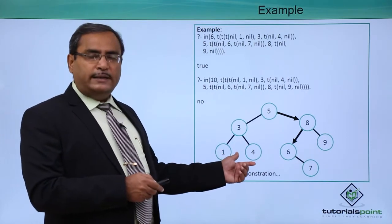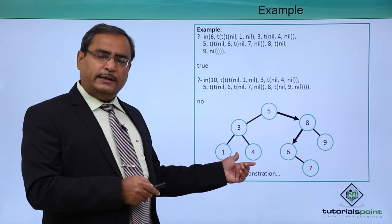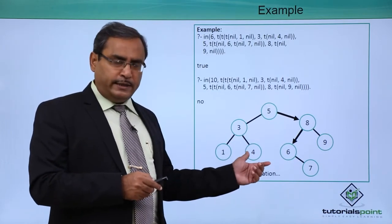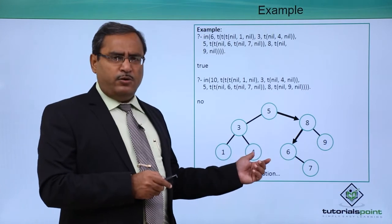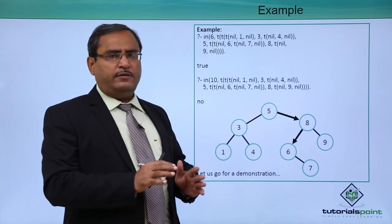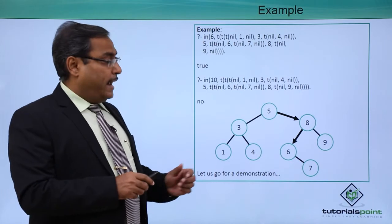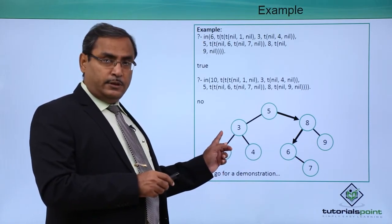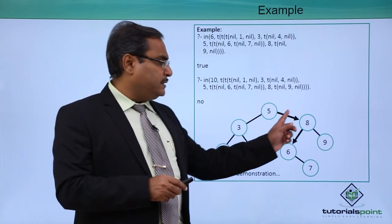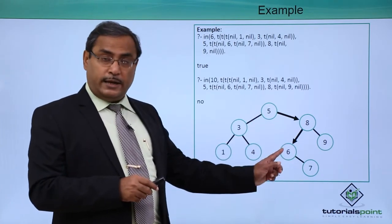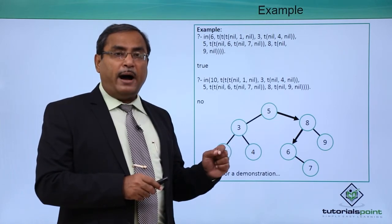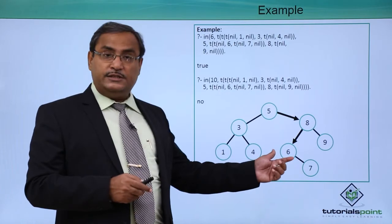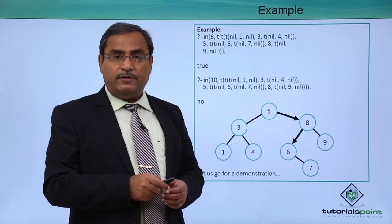Here is the binary search tree we are working with. A binary search tree has mainly two properties. Property one: it should be a binary tree, meaning each node can have maximum two children. Property two: left subtree nodes will be lesser than the root node, and right subtree nodes will be greater than the root node. As a result, all values are distinct.